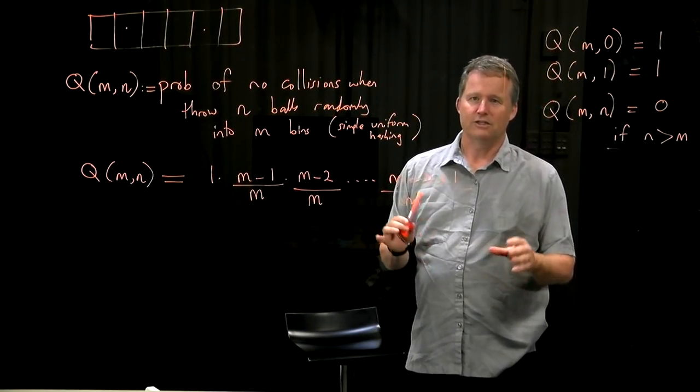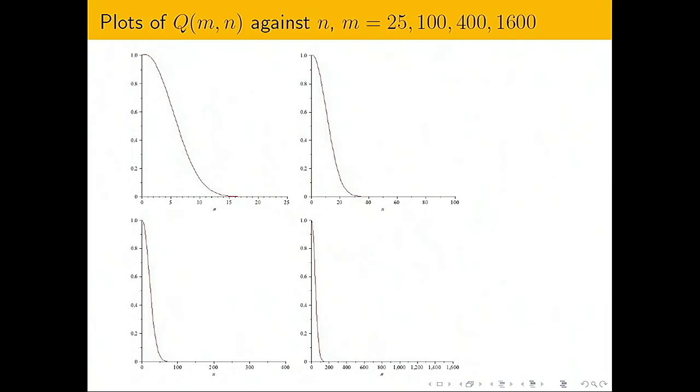So let's now have a look at some graphs. Now that we've got this function Q, remember that Q of M for Mike, N for November is the probability that there are no collisions if you put N for November items into M for Mike slots. And this is what it looks like. And I've got four plots here for different values of M for Mike. So the top left plot is for M equals 25. Then the one to the right, M is 100. Bottom left, M is 400. Bottom right, M is 1600.